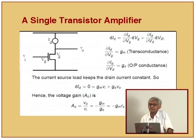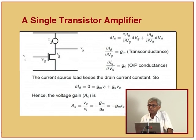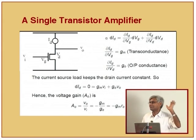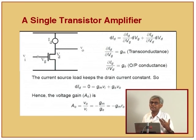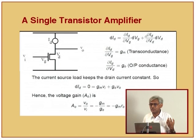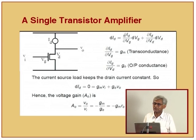Let us start from absolute basic principles - this is not analog design, this is elementary calculus. What is the total differential of the current flowing through the circuit, ID? This is the partial differential with respect to the gate times delta VG, and partial differential with respect to the drain voltage times delta VD. After all, ID depends only on the gate voltage and the drain voltage. This is the starting equation for amplification.